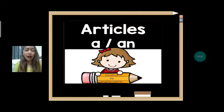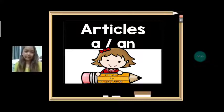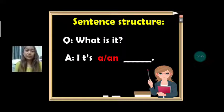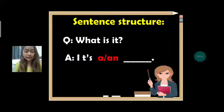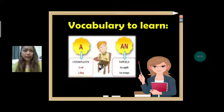The articles are A and AN. Our sentence structure for today is: What is it? The answer is: it's A or AN blank.